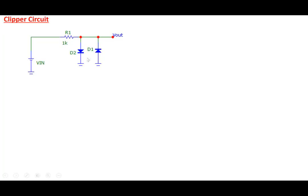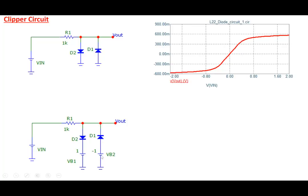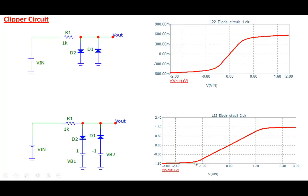We can combine the two circuits together — a diode in each direction. D2 will cause the output to saturate in the positive direction; D1 will cause it to saturate in the negative direction. We expect characteristics of this particular form. Each threshold point at ±0.7V can be shifted by attaching biases. For example, attaching +1V and −1V shifts saturation to around ±1.7V.